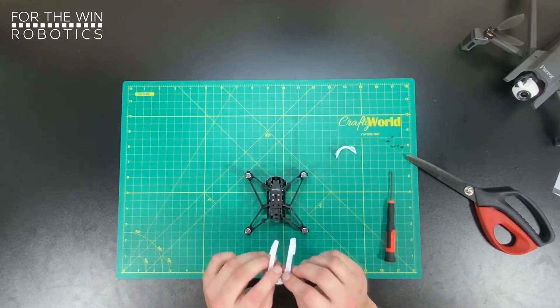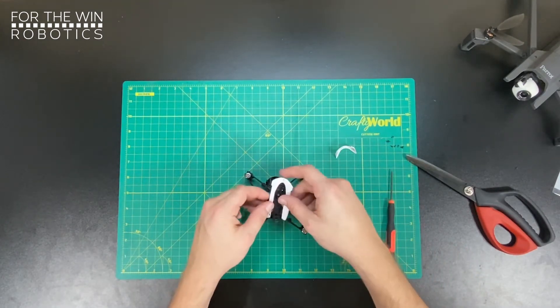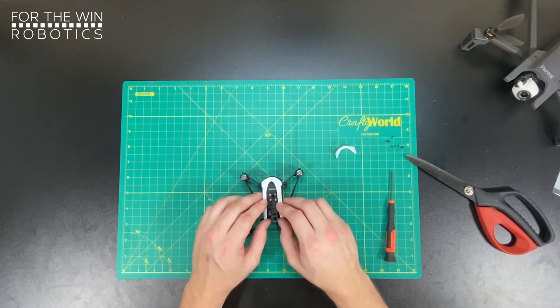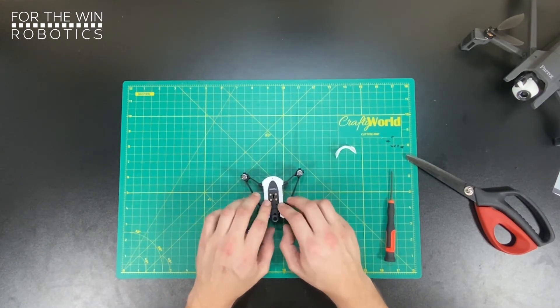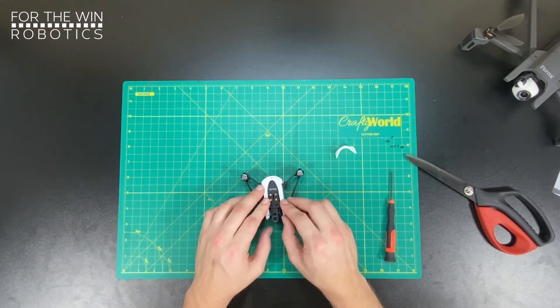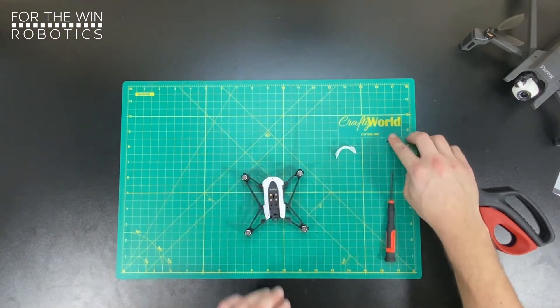Now next one is the top cover. This has two small tubes right here that are going to connect into the drone to the central body. Once those are connected, you should be able to screw right in three screws.